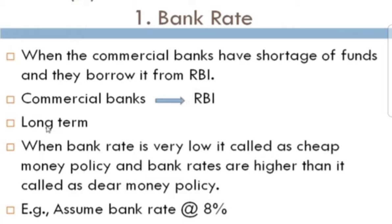When the supply of money is higher than the demand for money, there is inflation. Reducing money supply helps in reducing inflation. If the supply of money is lower than the demand, there will be depression. When the bank rate is very low it is called a cheap money policy, and when bank rates are higher it is called a dear money policy. For example, if the bank rate is 4–6% it is cheap money policy; if it is 10–12% it is dear money policy.